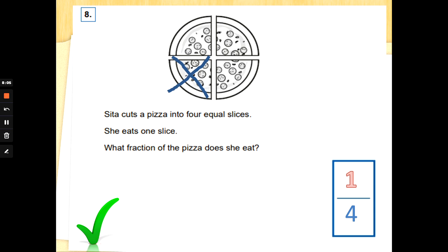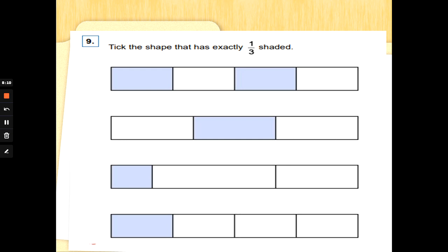Number nine. Tick the shape that has exactly one third shaded. The fraction one third means one out of three pieces is coloured in. And in this case, it's coloured in blue. Can you see the rectangle that has one out of three parts coloured in blue equally? Remember what you know about equal. Fractions are split into equal sizes. There you go. It can't be the top box because that's been split into one, two, three, four parts. It can't be the bottom box because that's been split into one, two, three, four equal parts. If we look at the rectangle underneath the right answer, it has been split into three pieces, but they're not equal.